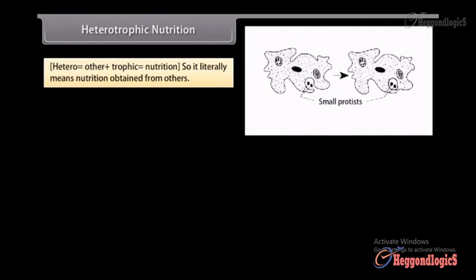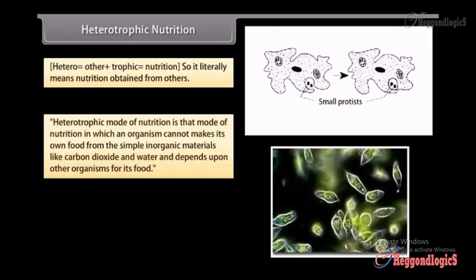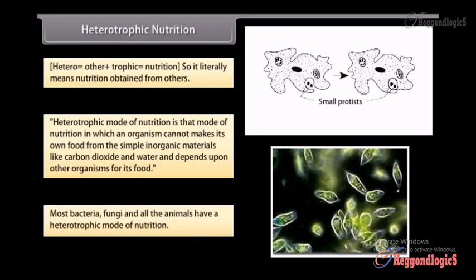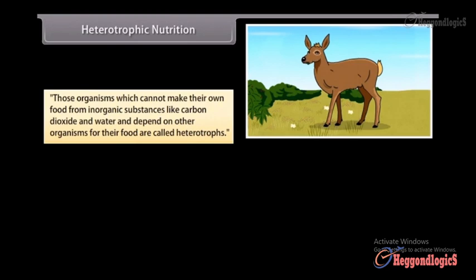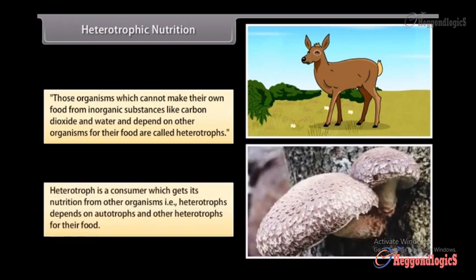Heterotrophic nutrition. Heterotrophic nutrition literally means nutrition obtained from others. Heterotrophic mode of nutrition is that mode of nutrition in which an organism cannot make its own food from simple inorganic materials like carbon dioxide and water and depends upon other organisms for its food. Most bacteria, fungi, and all the animals have a heterotrophic mode of nutrition. Those organisms which cannot make their own food from inorganic substances like carbon dioxide and water and depend on other organisms for their food are called heterotrophs. A heterotroph is a consumer which gets its nutrition from other organisms. That is, heterotrophs depend on autotrophs and other heterotrophs for their food.